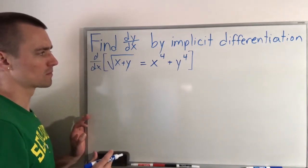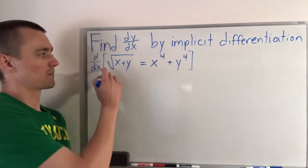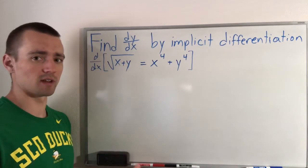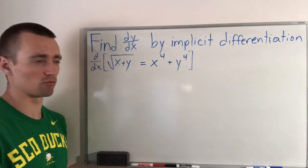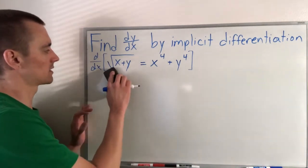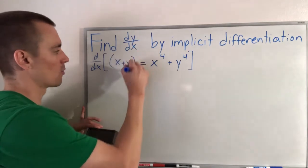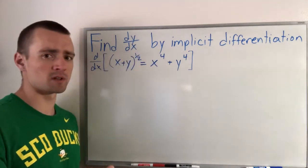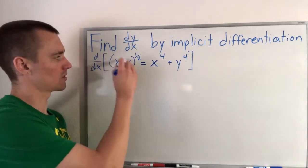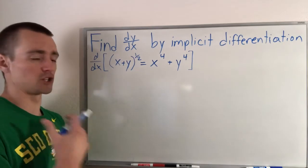Before we do this, what you want to think about is that whenever you're taking the derivative of something with a square root, it's easier to write that in terms of a power and then apply the power rule instead of trying to figure out how to take the derivative of a root. So what I mean by that is instead of saying the square root of x plus y, what we want to say is x plus y to the one-half power, because raising something to the one-half power is the same as taking the square root. So we're going to take the derivative of x plus y to the one-half power and apply chain rule to do that.